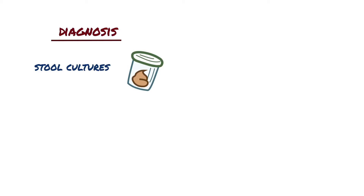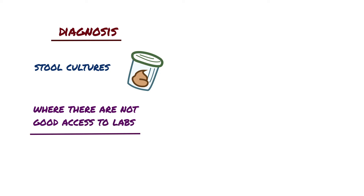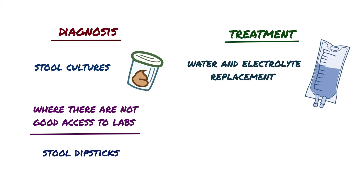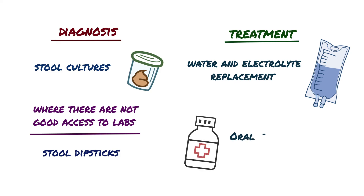To diagnose cholera, you can do stool cultures for Vibrio cholerae. In some developing countries without good lab access, stool dipsticks are used to quickly check for cholera. The most important part of treatment is water and electrolyte replacement to correct severe dehydration and salt depletion. Many antimicrobial agents are effective against Vibrio cholerae, but play a secondary role; oral tetracycline or doxycycline can reduce stool output and shorten the period of Vibrio excretion.